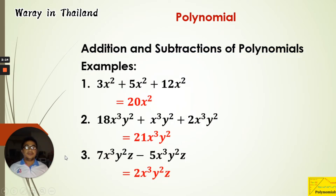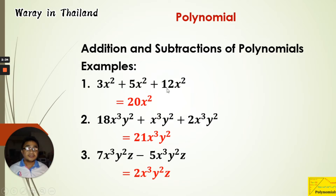Example 1: We have 3x² + 5x² + 12x². We can see that all three terms have the variable x with power 2, so they are all like terms. We can add the coefficients: 3 plus 5 is 8, plus 12 is 20. So the answer is 20x².